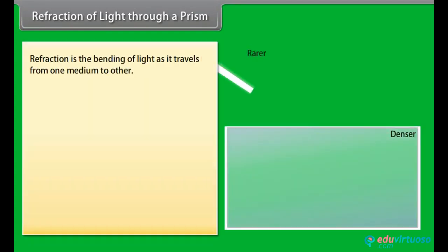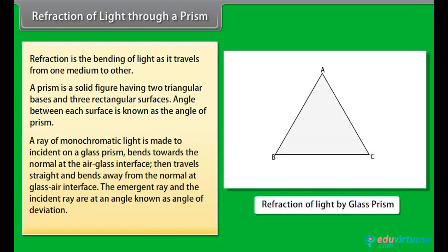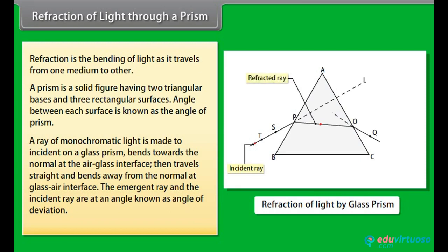Refraction of Light Through a Prism: Refraction is the bending of light as it travels from one medium to another. A prism is a solid figure having two triangular bases and three rectangular surfaces. The angle between each surface is known as the angle of prism. A ray of monochromatic light incident on a glass prism bends towards the normal at the air-glass interface, then travels straight and bends away from the normal at the glass-air interface. The angle between the emergent ray and the incident ray is known as the angle of deviation.